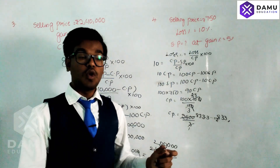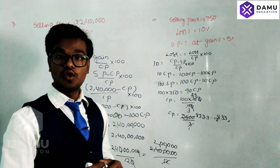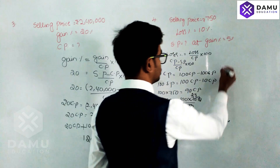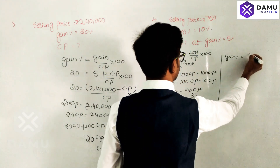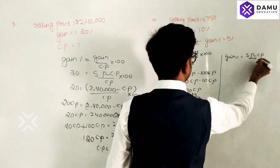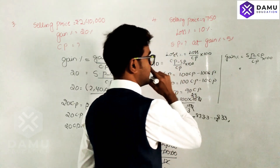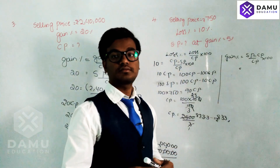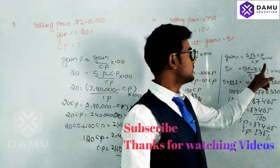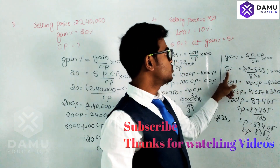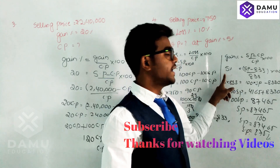Now substitute the cost price into the gain percentage formula to find the new selling price. Gain percentage equals (SP minus CP) divided by CP, multiplied by 100. We substitute 5% for gain percentage and 833 for CP.